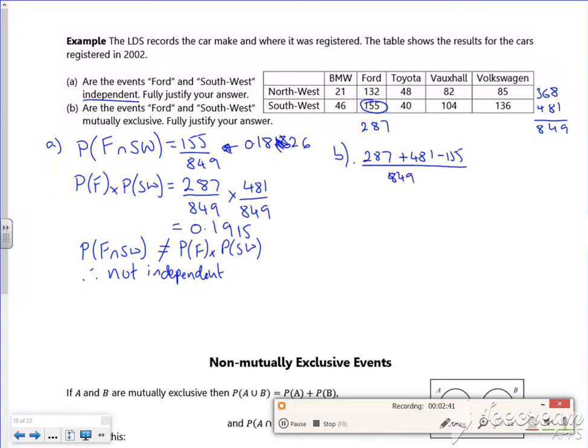So that gives us 613 over 849. That's the probability of a Ford or Southwest, straight from the table. I'm just adding the numbers from the table.